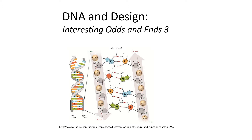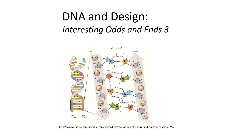You may have wondered why in the world would DNA use thymine and RNA use uracil instead? We will touch upon that in this last appendix lecture. Here's an abbreviated answer from Science Daily: basically uracil is energetically less expensive to produce than thymine. But we're going to find that the situation is more subtle and more complex than that.